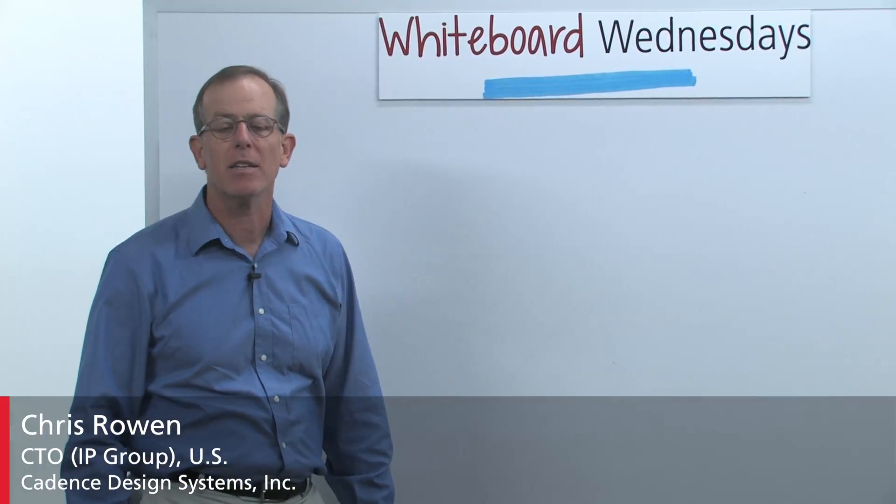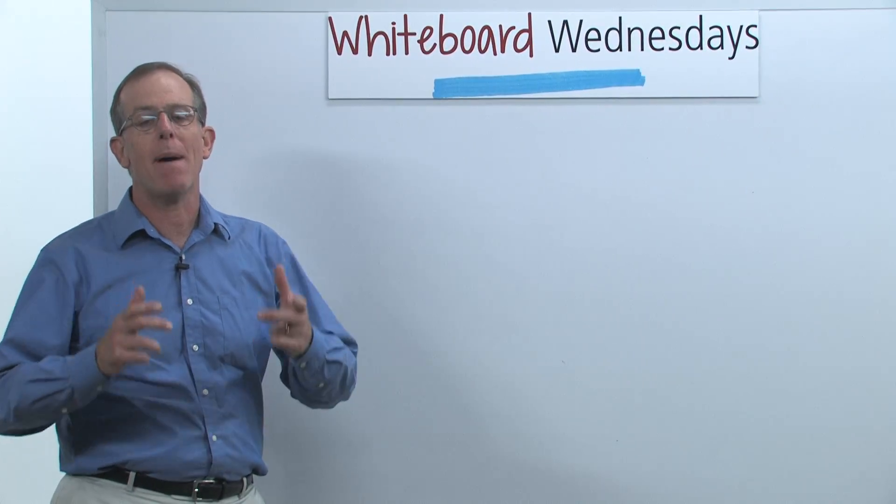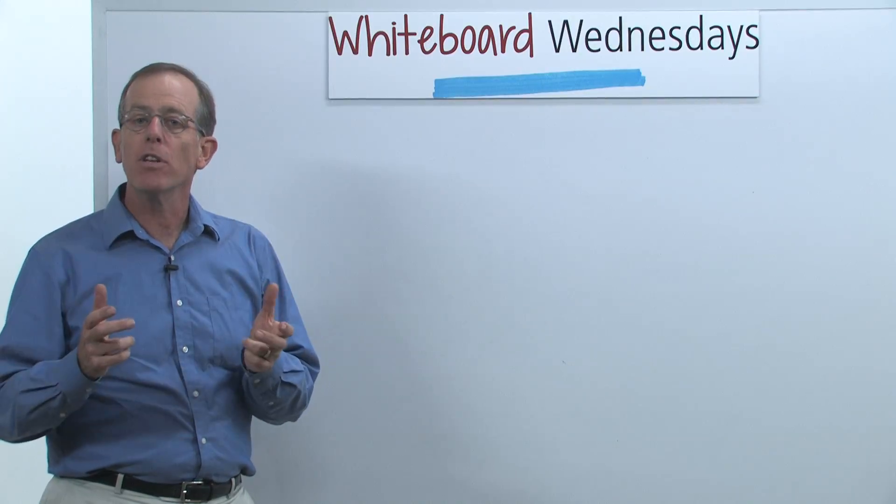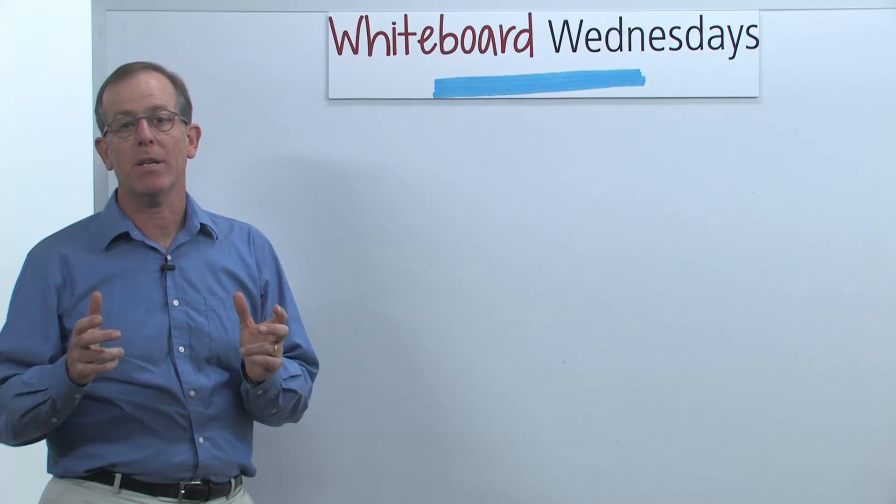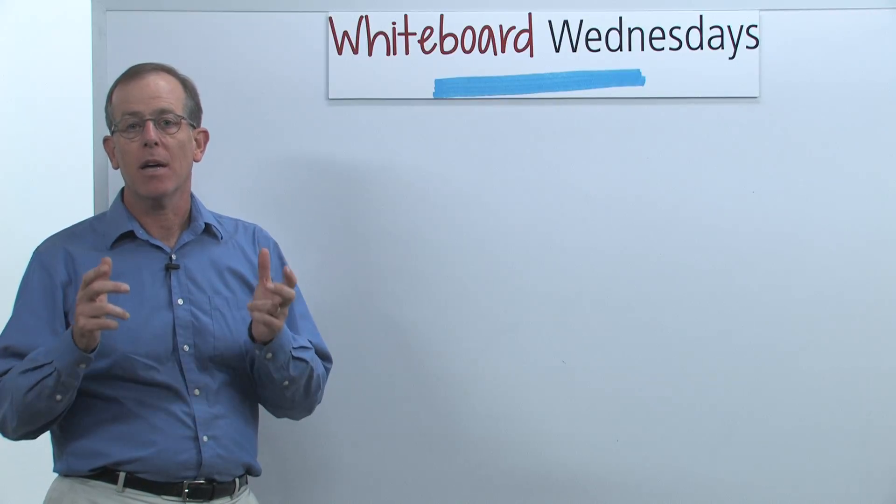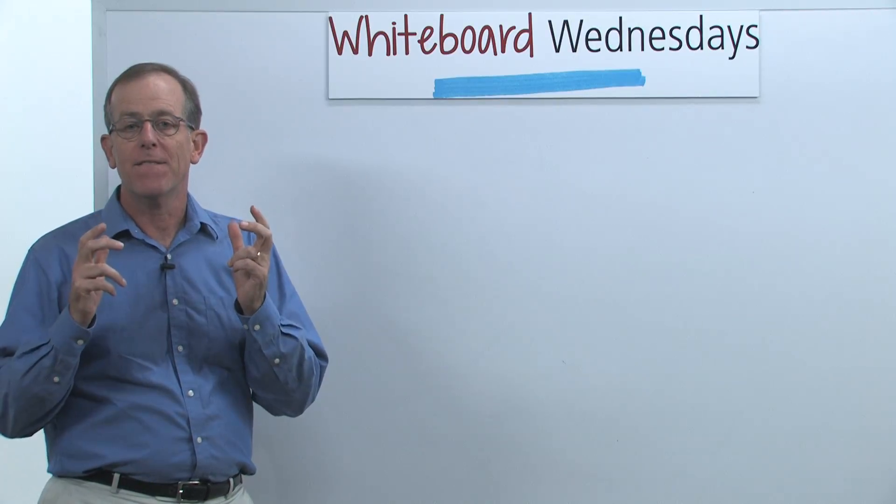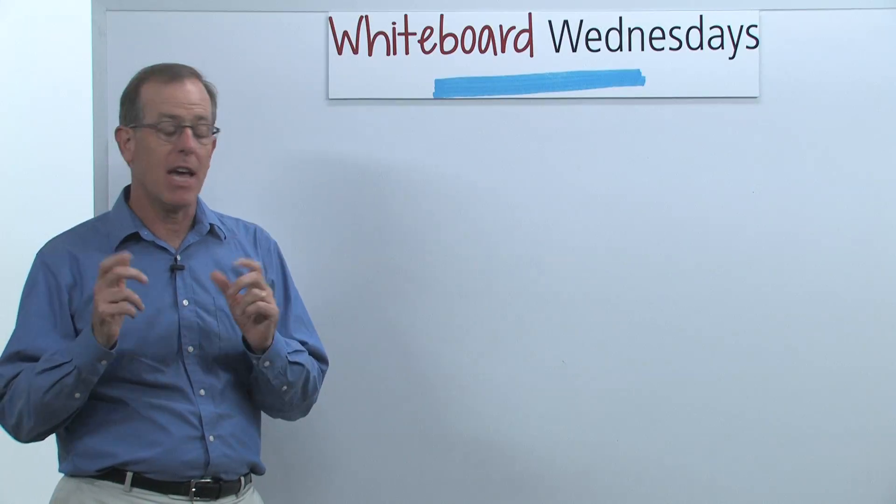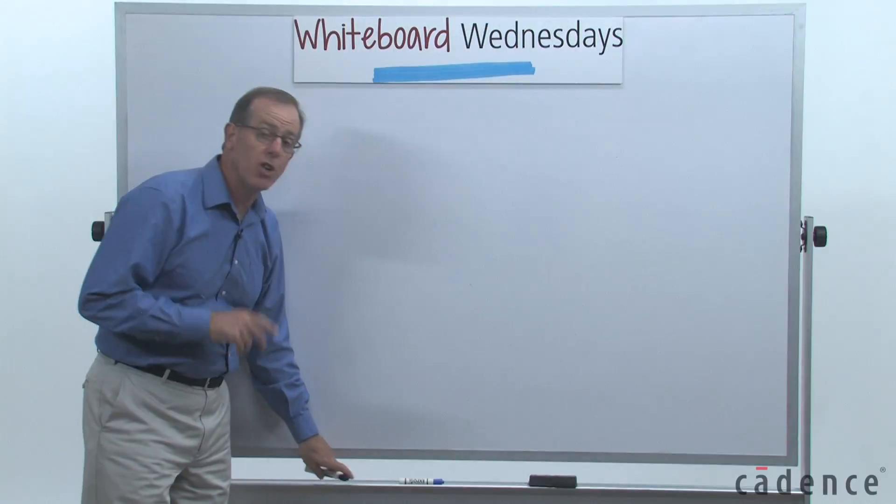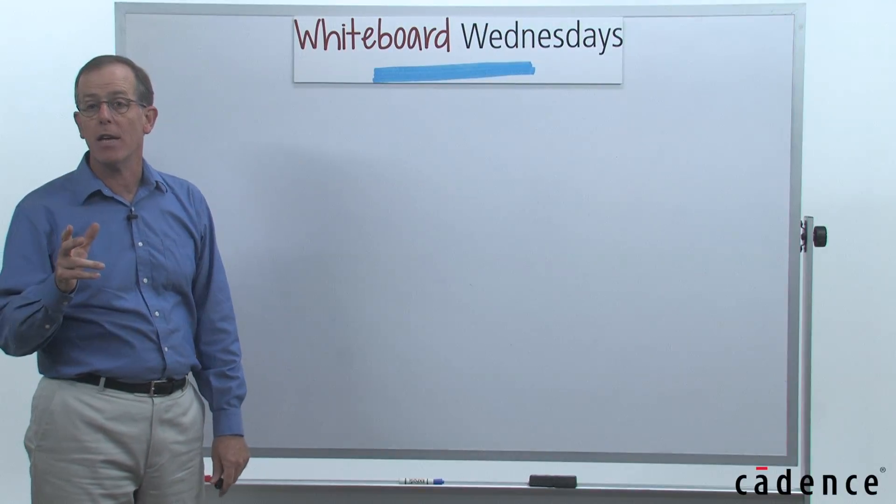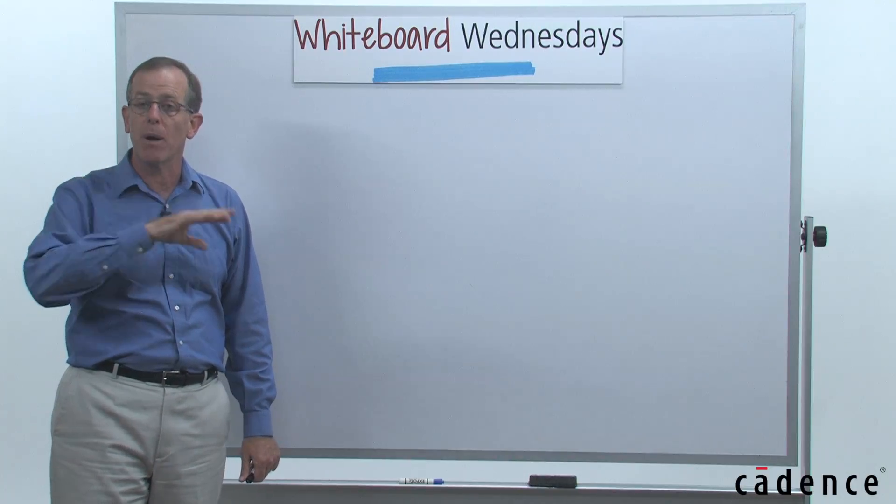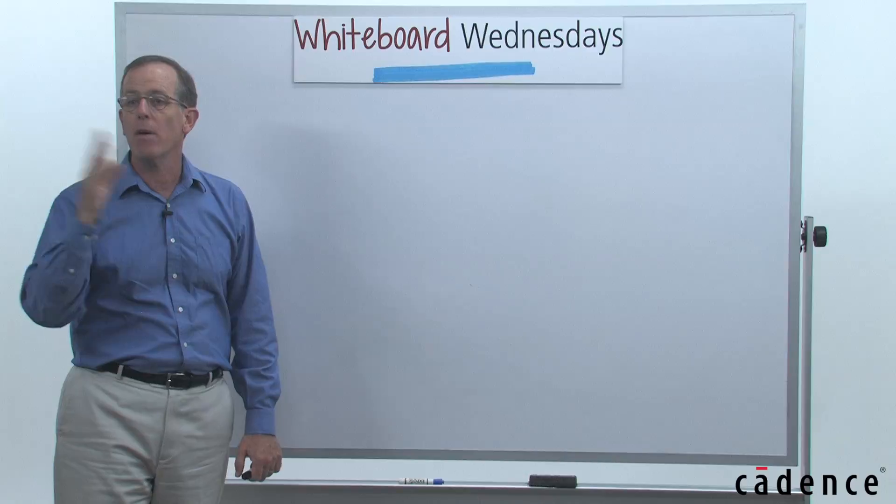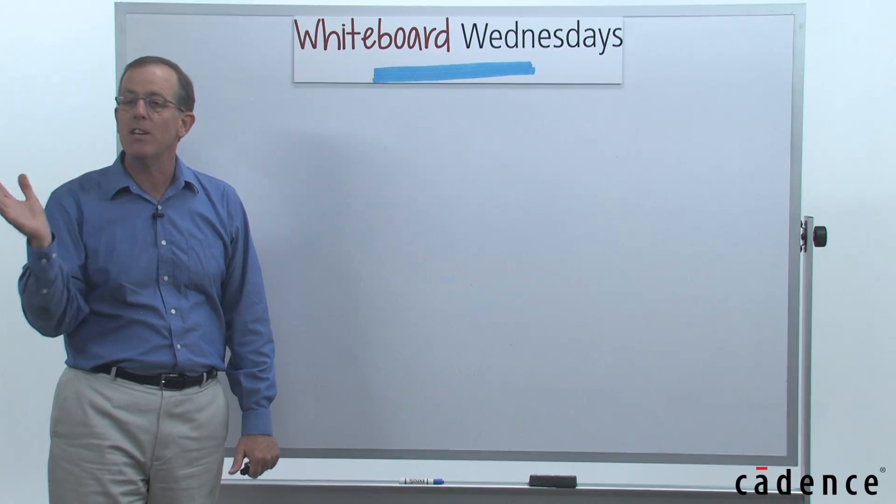Hi, I'm Chris Rowan. I'm the CTO of the IP group of Cadence, and I'm going to talk to you today about mapping convolutional neural networks onto a high-performance vision DSP, the Cadence Vision P5 DSP, which is a general purpose vision-oriented DSP that's useful not just for neural network applications, but for a wide range of image processing and vision applications.